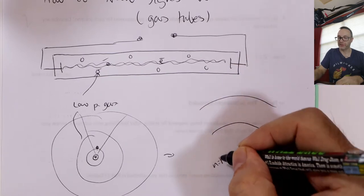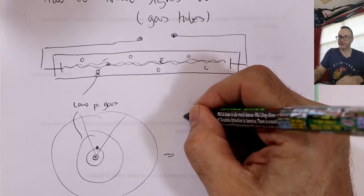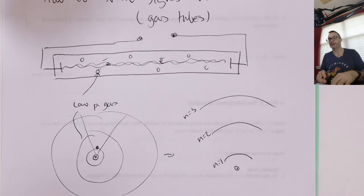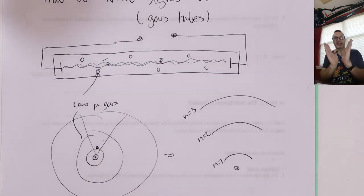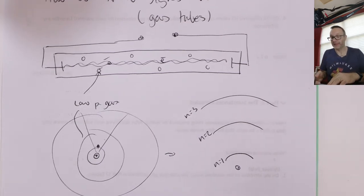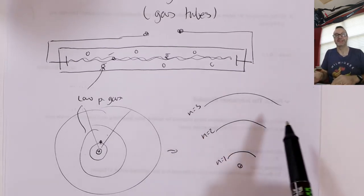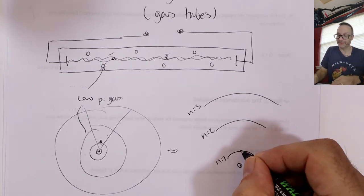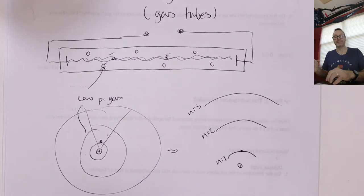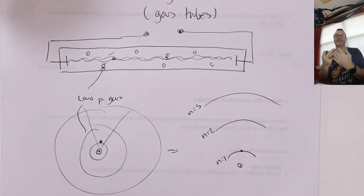I've zoomed in on a segment of what we call the energy level diagram. When I straighten the lines out, that's the true energy level diagram. Now, if I hit this atom with a bunch of energy, to prevent being destroyed, the atom will absorb the energy.